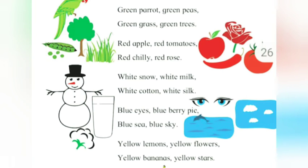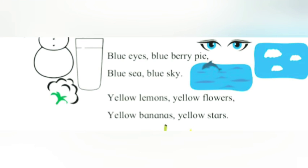White snow, white milk. White cotton, white silk. Blue eyes, blueberry pie. Blue sea, blue sky. Yellow lemons, yellow flowers. Yellow bananas, yellow stars.